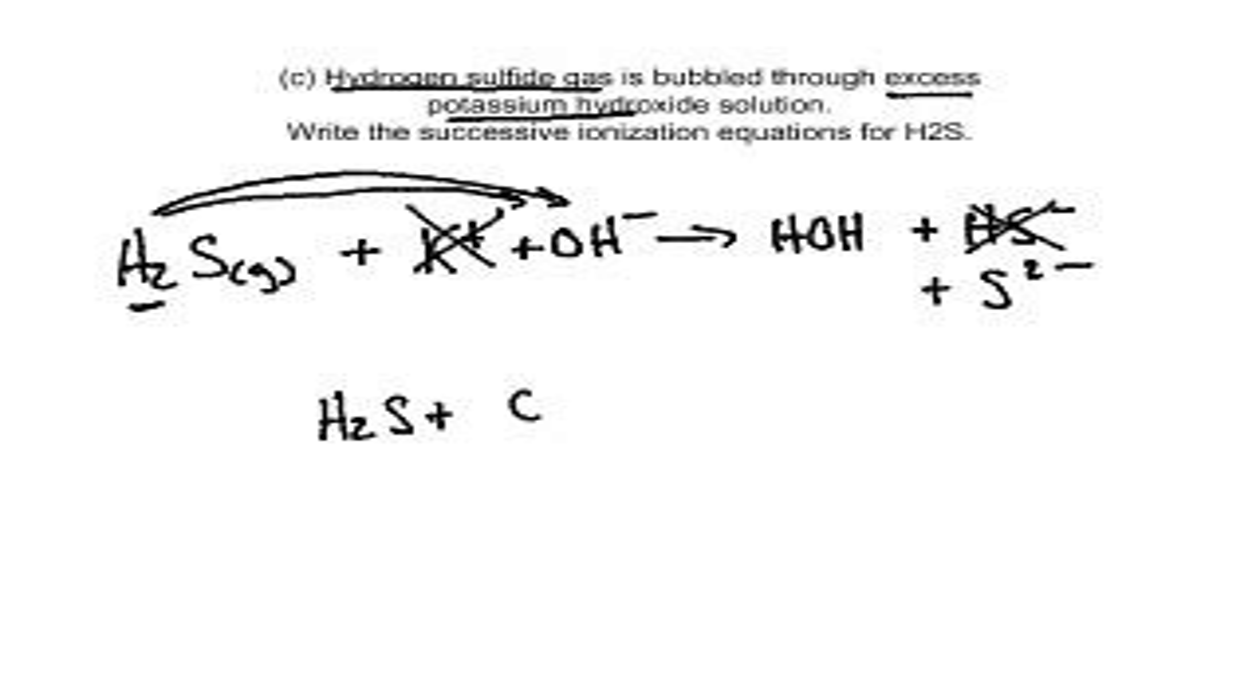The second portion says write the successive ionizations. If you write H2S plus OH-, I'm going to need to put a 2 here to balance that equation, and a 2 here. You'll make water, HOH plus HS-, and then the HS- continues to react with the OH- to make water plus S2-. These are the different reaction steps.